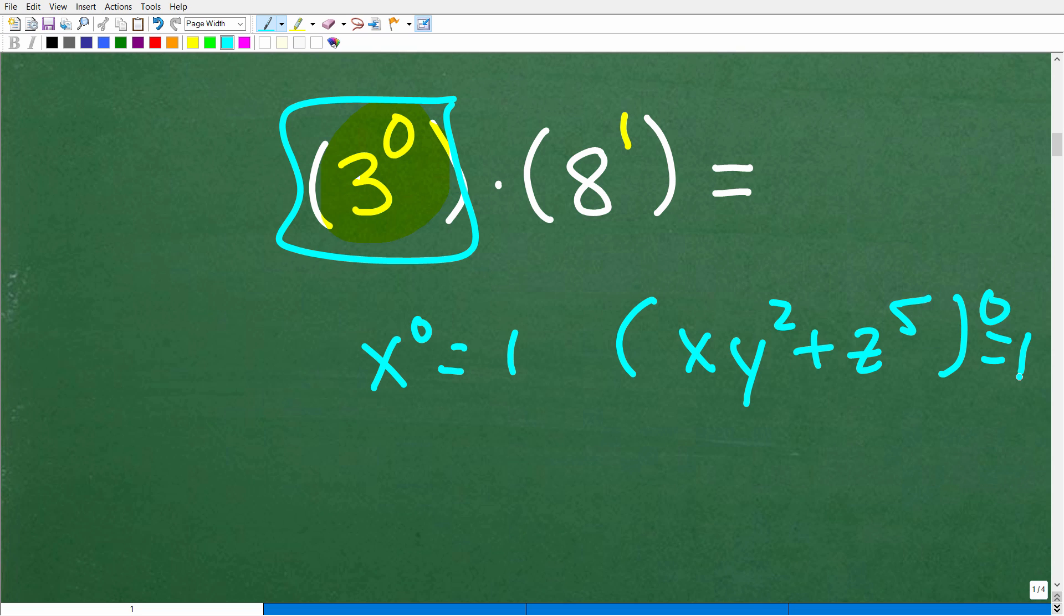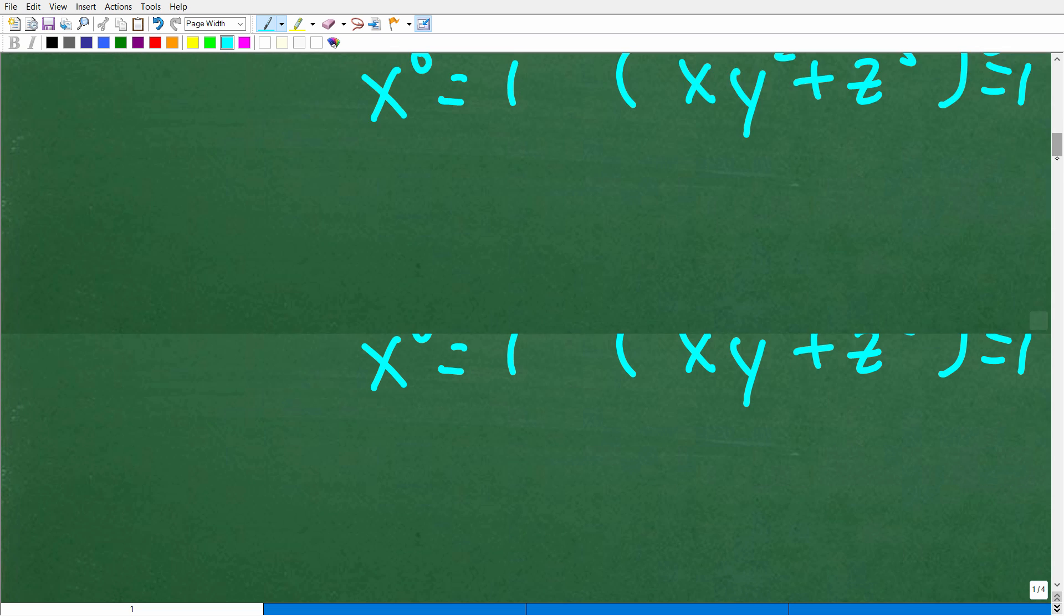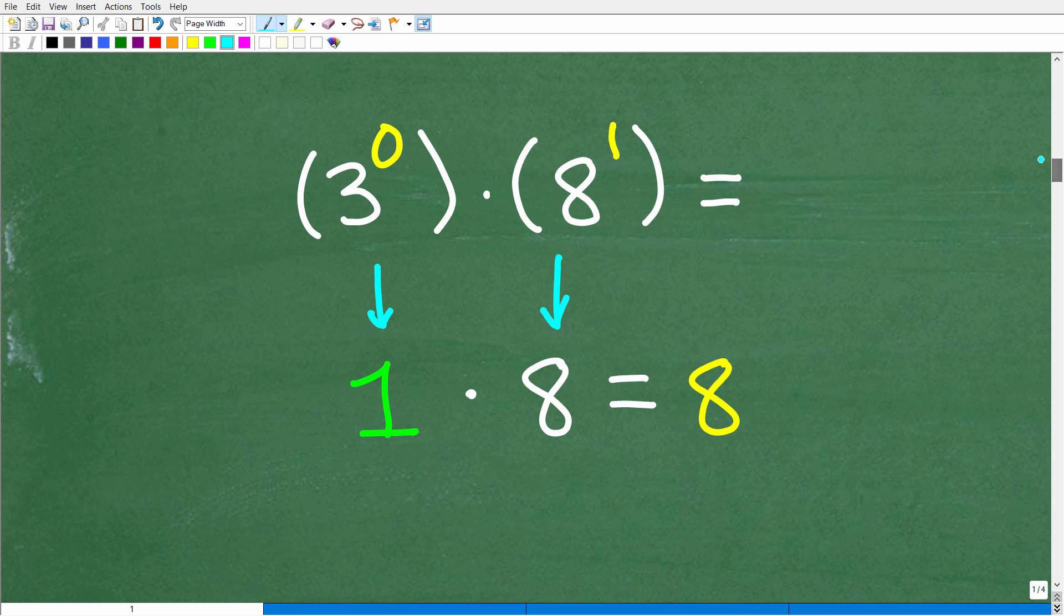Now this becomes a very simple math problem indeed. Let's actually do this. So 3 to the zero is one. 8 to the first is 8, so 1 times 8 is, of course, 8.